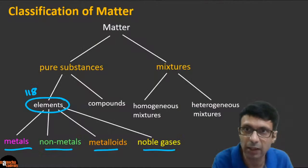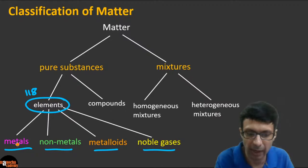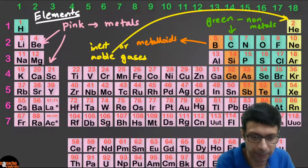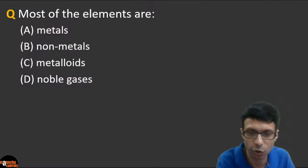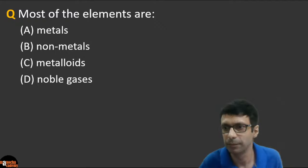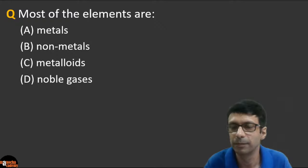Our focus is mainly on elements, specifically metals and non-metals under elements, which fall under pure substances. Most of the elements in the periodic table — what are they? Look at the picture: the maximum color is pink. Most of the elements are metals.